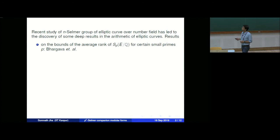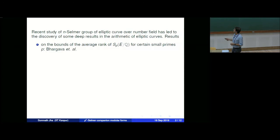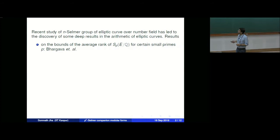The p-Selmer group gives an upper bound on the Z-rank of the Mordell-Weil group. The celebrated work of Manjul Bhargava and others has given upper bounds on the average rank of the p-Selmer group for certain small primes. Using that, an average property of the Mordell-Weil group can be determined, and one can say average versions of the BSD conjecture hold and so on.